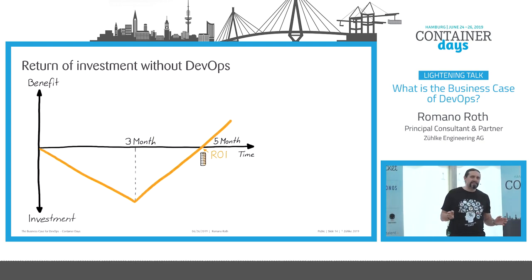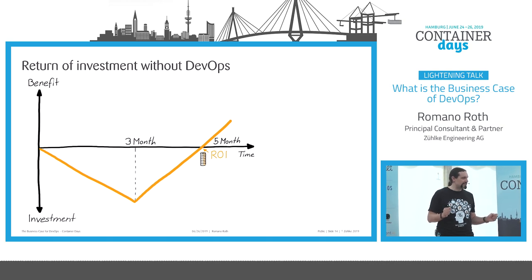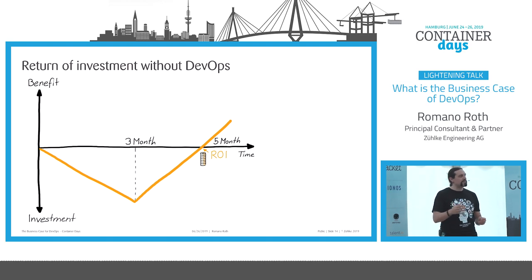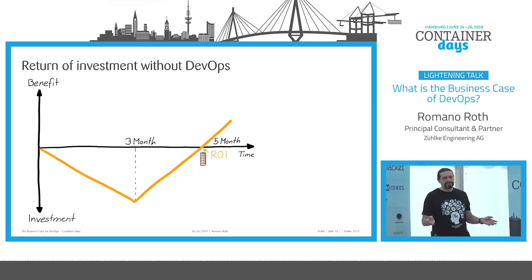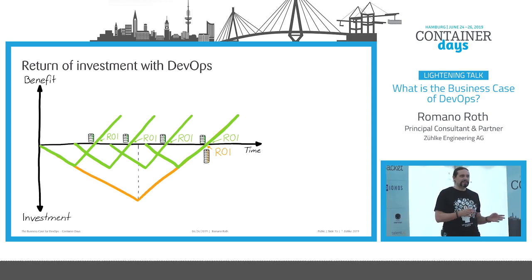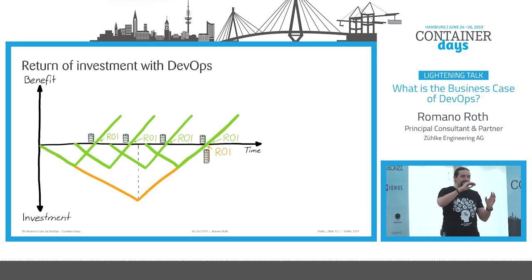When we look at the return on investment without DevOps, we see large enterprises with release cycles of three months. During those three months, no value is generated — features and user stories go through definition, implementation, and deployment, but no value is generated. After release, after those three months, we generate value and the customer pays us. So the return on investment is about two months in the future. With DevOps, it is faster because we can deliver value to the customer faster with smaller release cycles and smaller features, enabling a faster return on investment.